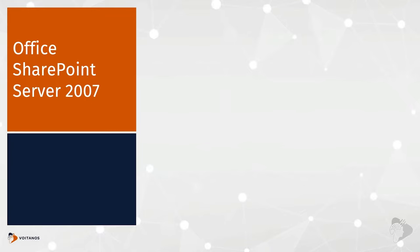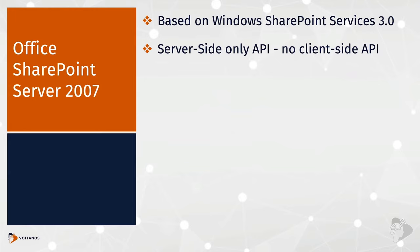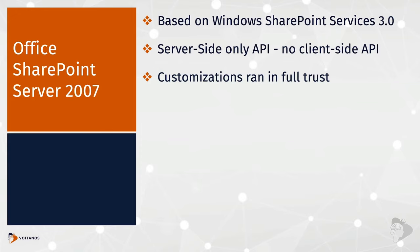Microsoft took notice and invested in this for the next version: Office SharePoint Server 2007, commonly known as MOSS 2007, and its free version, Windows SharePoint Services 3.0 (WSS v3). This version still only had a server-side API, so any customizations we created had to be deployed to the server. Our customizations continued to run in full trust with the same context as the SharePoint process, which meant a failing customization could also crash the entire SharePoint process on the server.